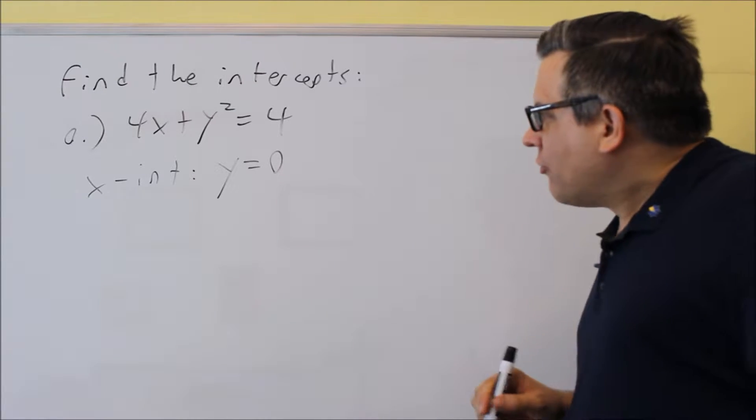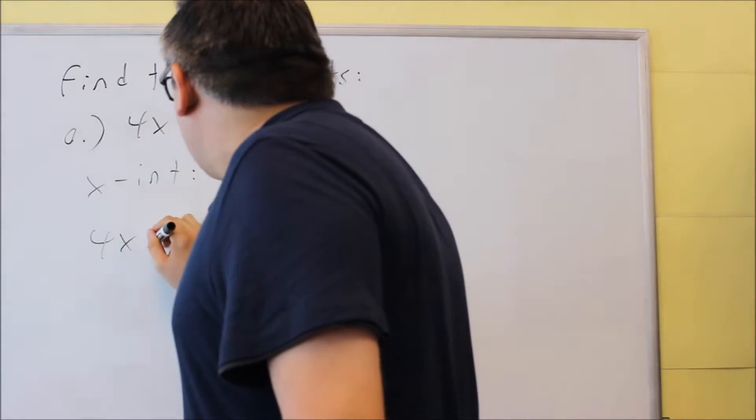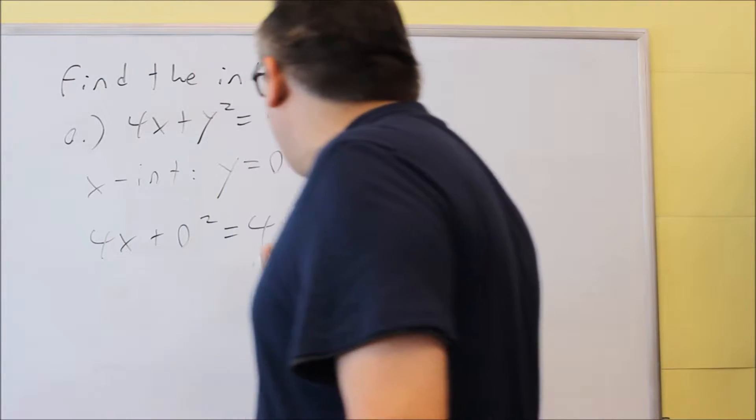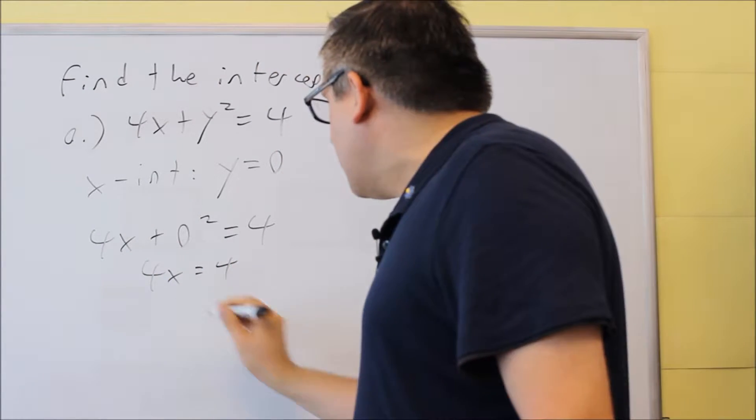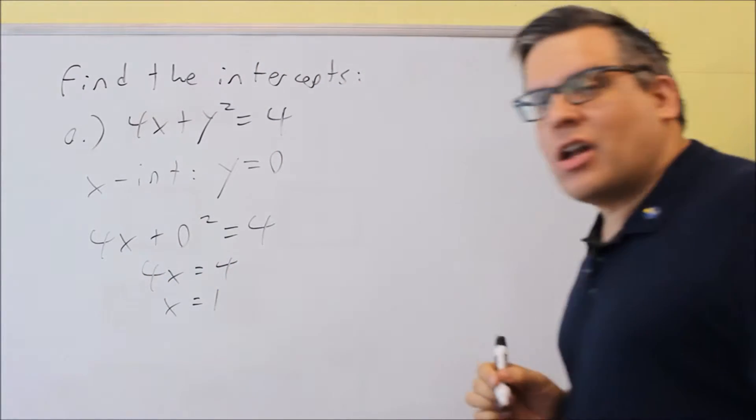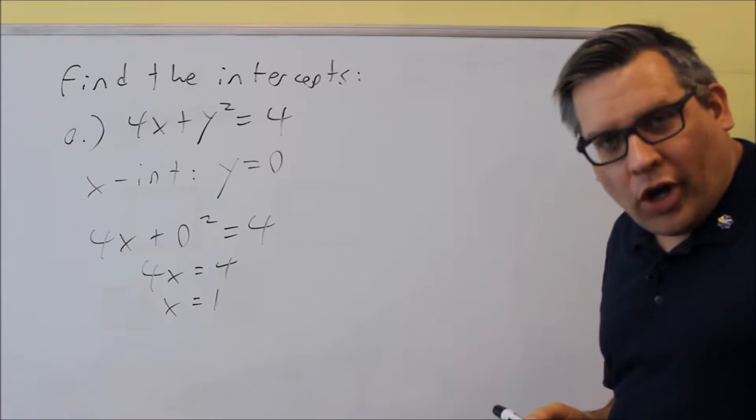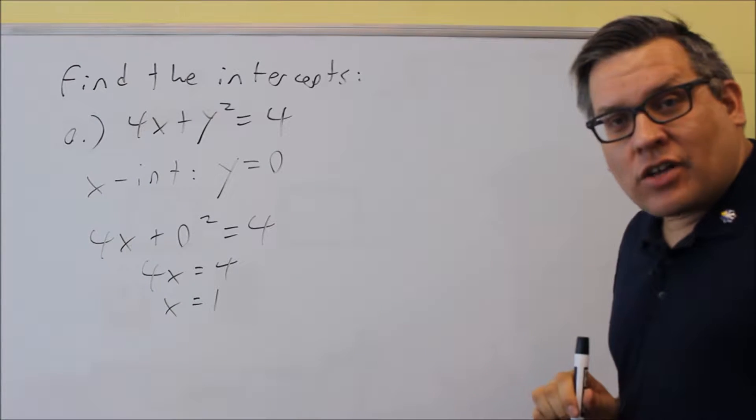Put in a 0 for y. 4x plus 0 squared equals 4. 0 goes away, we get 4x equals 4. And when we solve for that, we get x is equal to 1. This is where it will cross the x-axis.